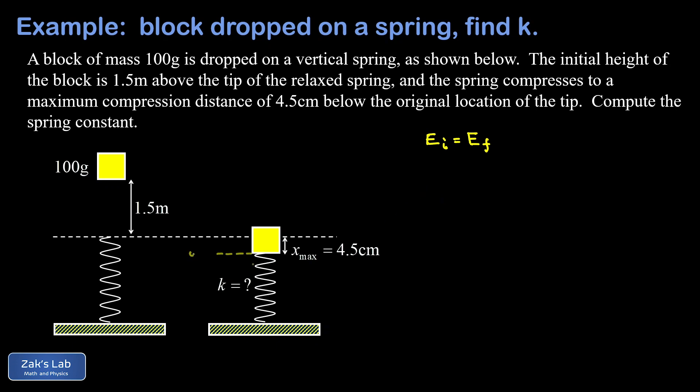The first way we're going to do this is with our origin located at the lowest point of the problem. We're going to call it y equals zero at that point, four and a half centimeters below the tip of the relaxed spring. Let's start figuring out what all of our initial energy terms are, what our final energy terms are, and we should be able to solve for k.